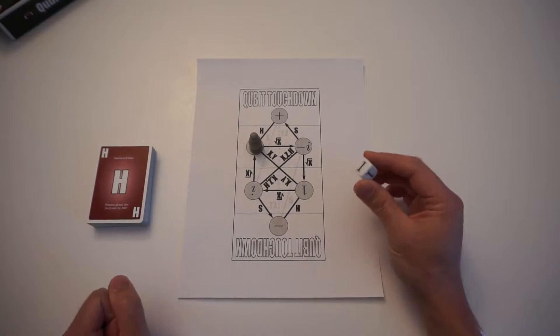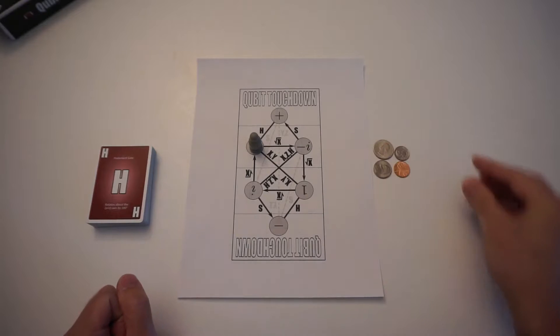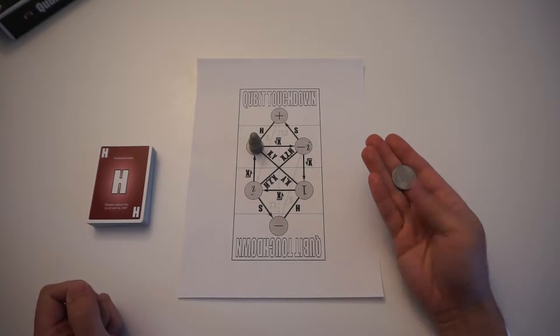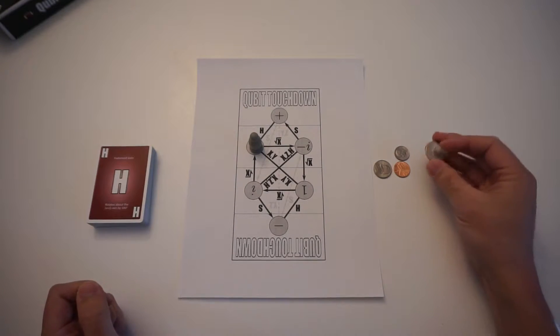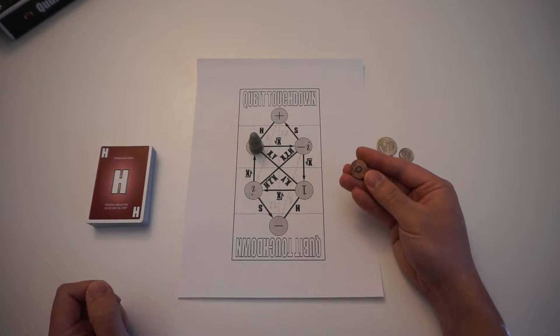So you can use anything that has a 50-50 chance and two options. An example would be a coin. You can flip the coin and heads can be zero and tails can be one. I have a variety of coins here. You can also label your coin.